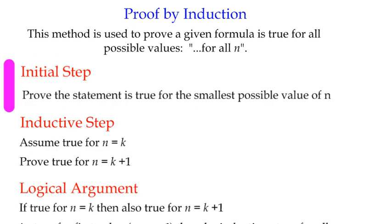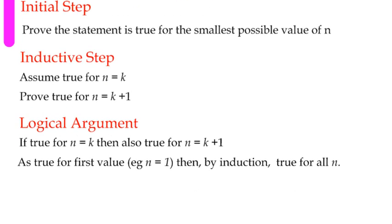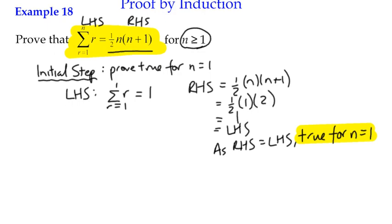What do we do next? Well, let's go back to the structure here. We're going to do what's called an inductive step, which is that assume true for n equals k, and then prove true for n equals k plus 1. So we do that in two parts. So let's write this down.